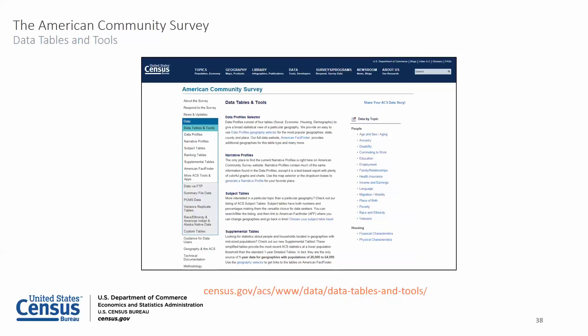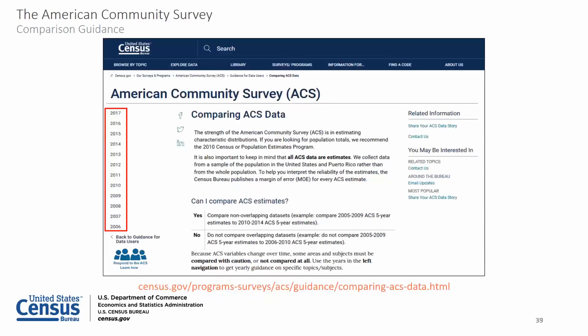Our data tables and tools page will introduce you to the most popular tools and data products with descriptions and links. The comparison guidance page provides broad information about comparing ACS estimates across years, with Census 2000 and with the 2010 Census. From the left navigation, you can find yearly guidance on the comparison of data sets as well as specific topics. For example, if you were interested in data about computer and internet use from 2016, you would select the year and topic. The Census Bureau recommends comparing the 2016 and 2015 data with caution due to question wording changes.